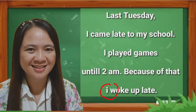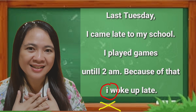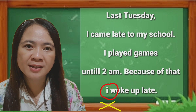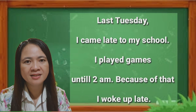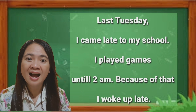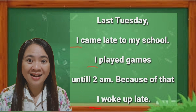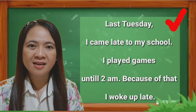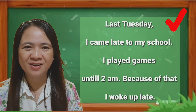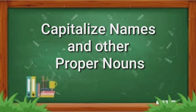Pay attention also to the use of the word "I". "I" refers to me. When you want to type or write it in a sentence, whether it is in the first position or in the middle of a sentence, "I" should always be a capital letter, because "I" refers to an individual. Rule number two: capitalize names and other proper nouns.